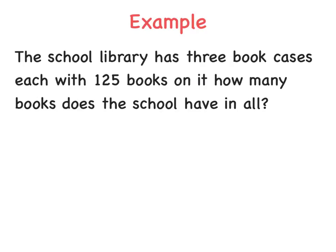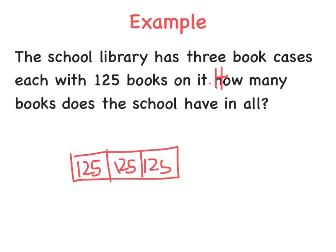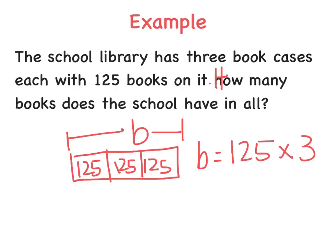Here's one more example. The school library has three bookcases, each with 125 books on it. How many books does the school library have in all? This is not comparing anything — we're just talking about this library and its bookcases. So my picture will be split into three parts to show the three different bookcases, and each bookcase has 125 books. I'm trying to find B, the total number of books. To solve for B, it will equal 125 times 3, since there are three groups of 125 across the three bookcases.